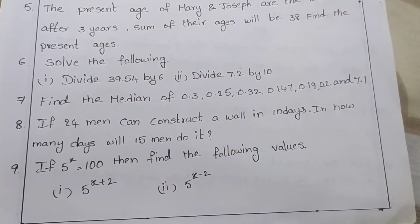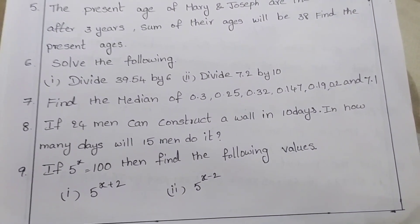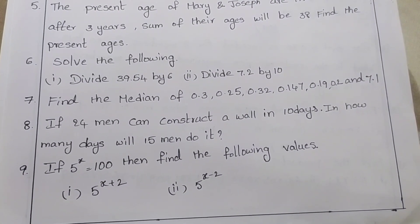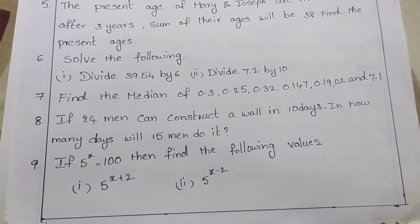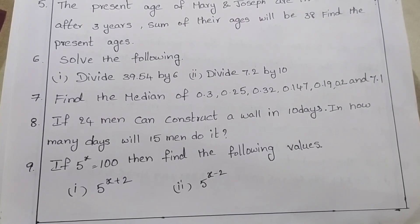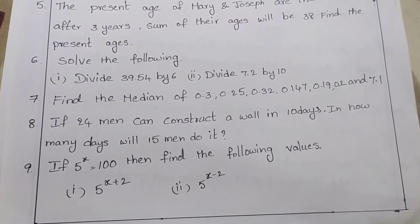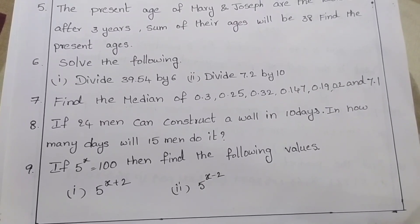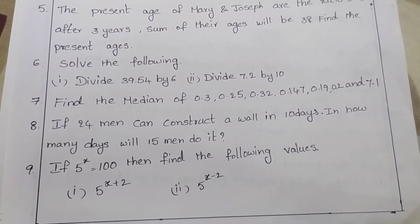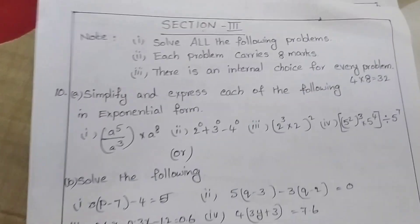If 5 to the power x is equal to 100, then find the following values: first, 5 to the power x plus 2; second, 5 to the power x minus 2.